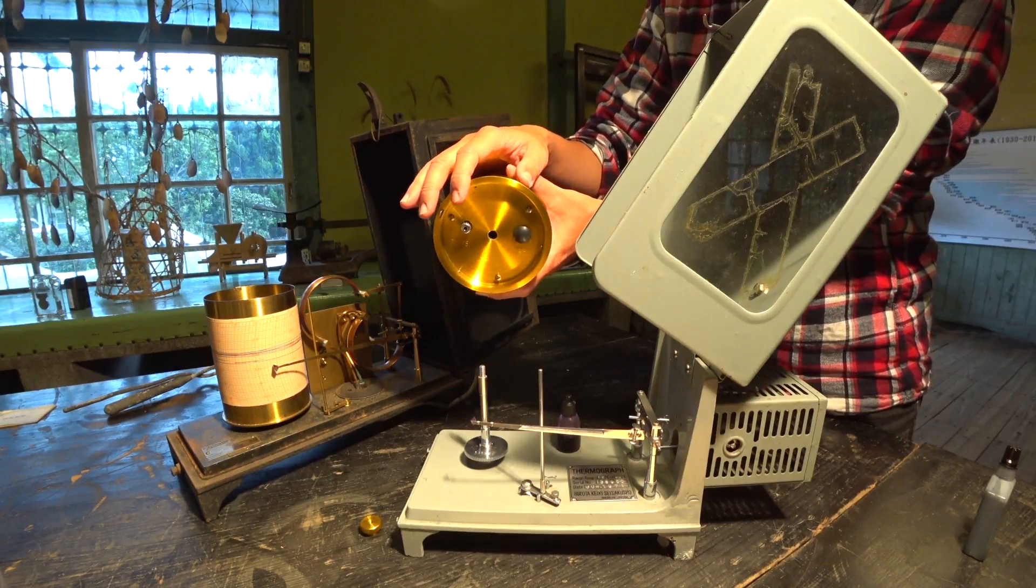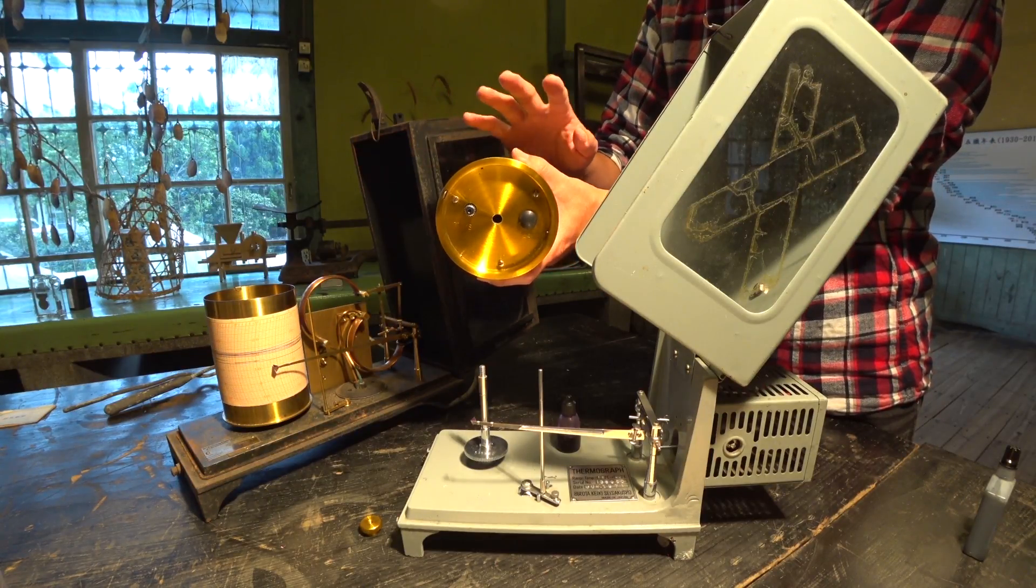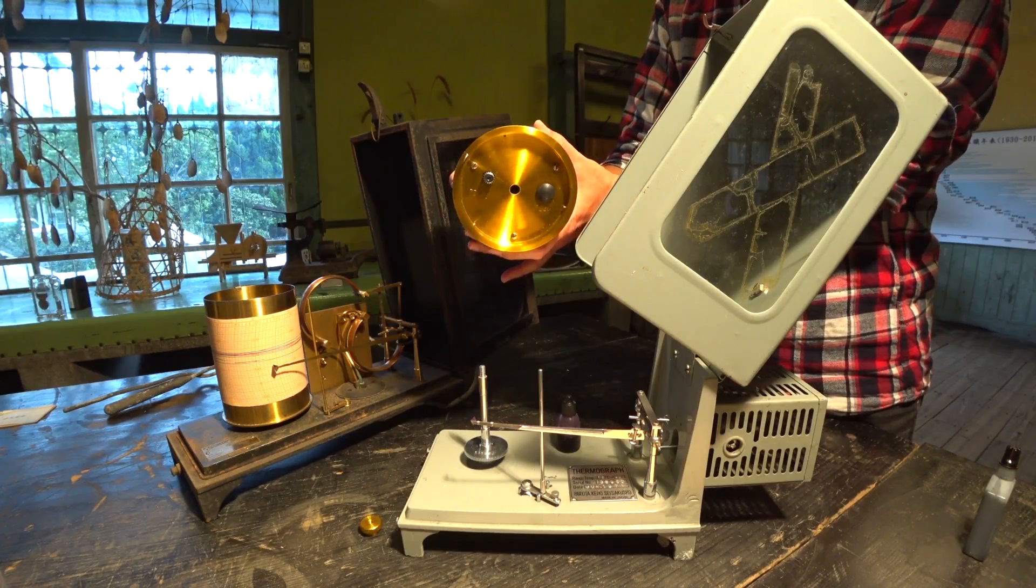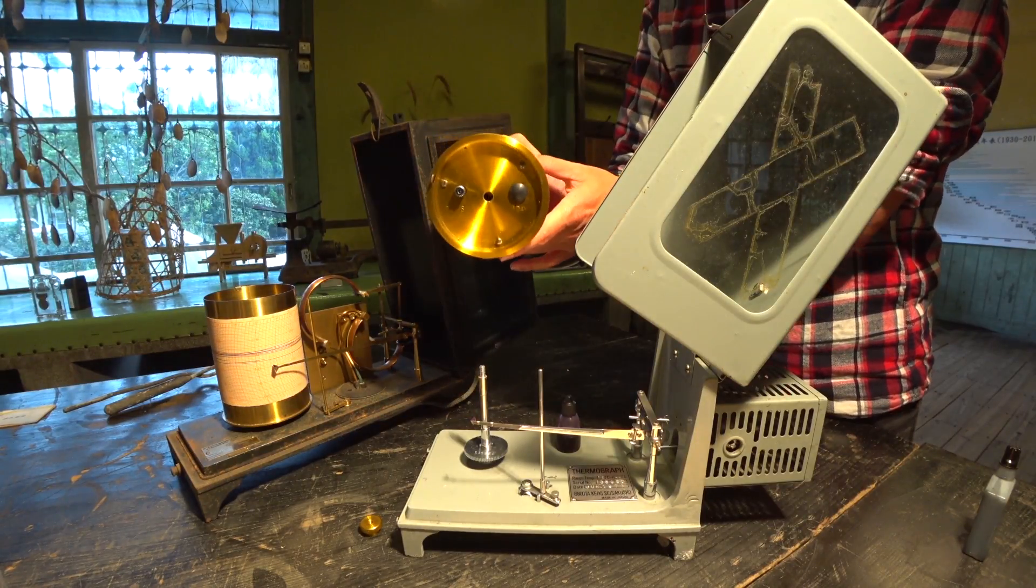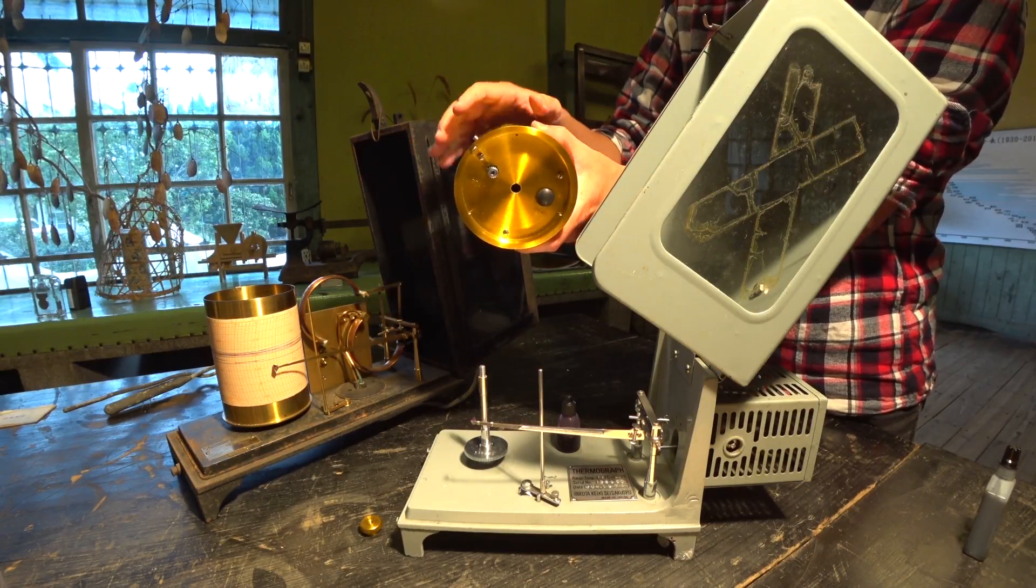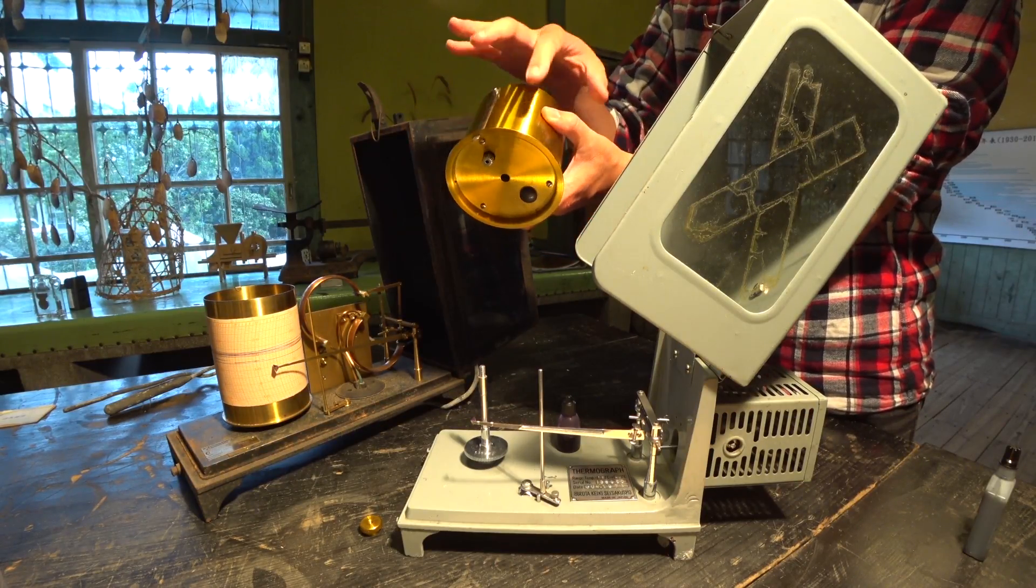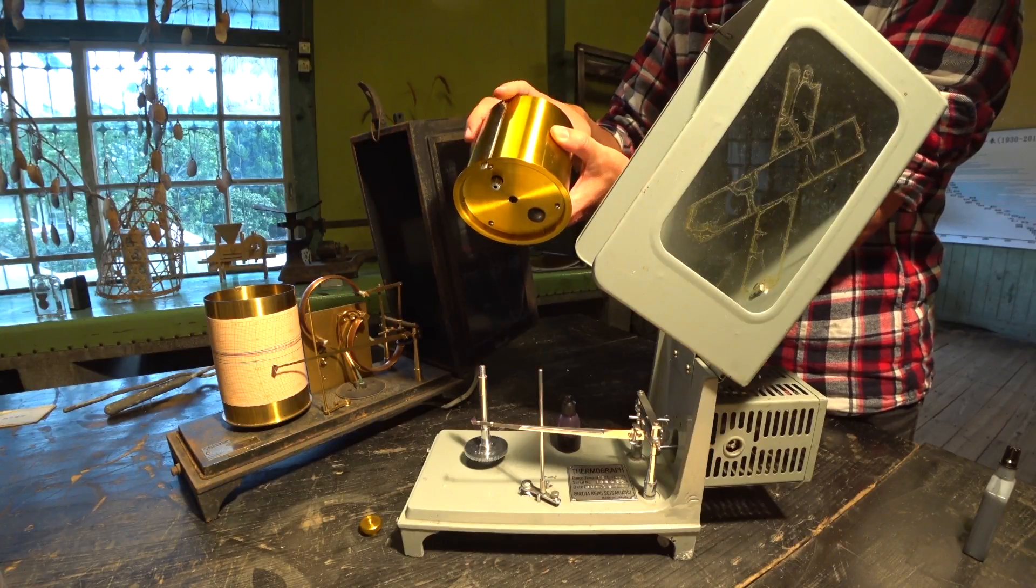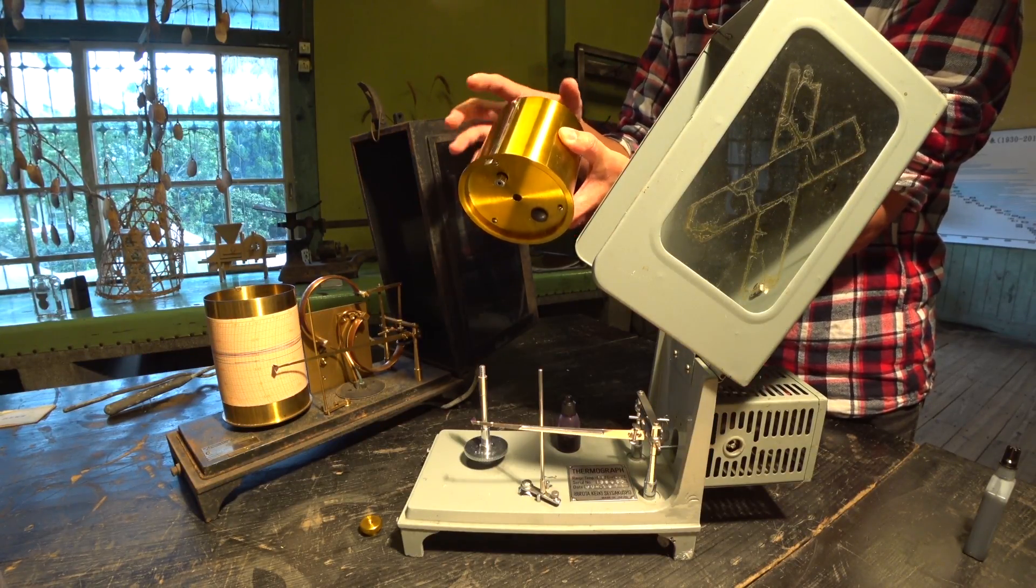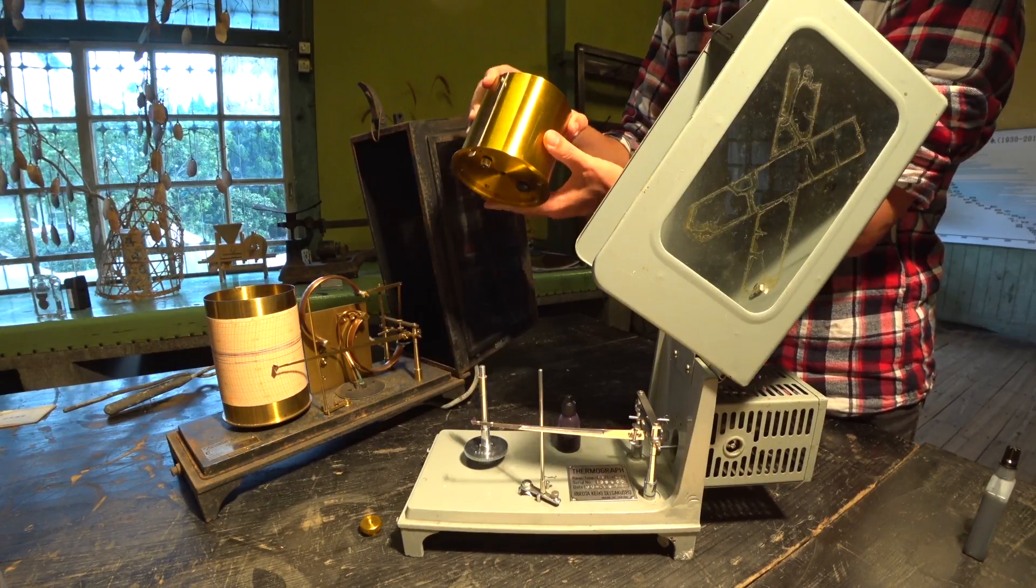這個圓桶的設計是可以記錄一個禮拜或者是一天,兩種不同的模式去切換記錄的時間。我們目前是把它放在七天的位置上,所以這個圓桶在這個記錄器上自轉一圈就是七天,就可以在記錄紙上畫出七天的溫度變化。